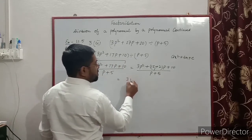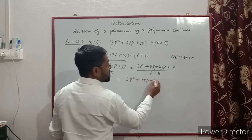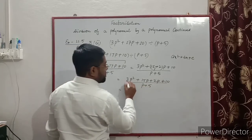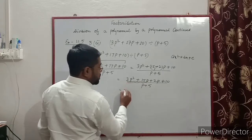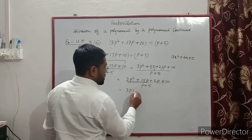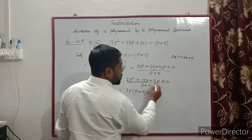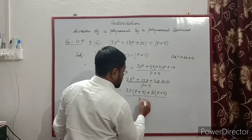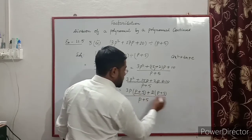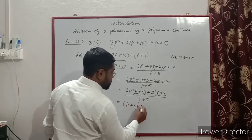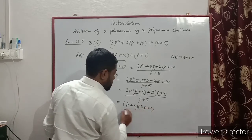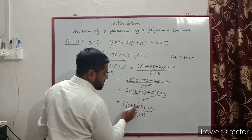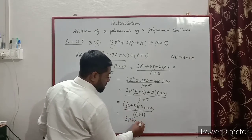We have 3p² + 15p + 2p + 10 divided by (p + 5). From the first group take out 3p, giving 3p(p + 5). From the second group take out 2, giving 2(p + 5). So (p + 5) is common: (p + 5)(3p + 2) divided by (p + 5). Canceling (p + 5), we have remaining 3p + 2. That is the answer.